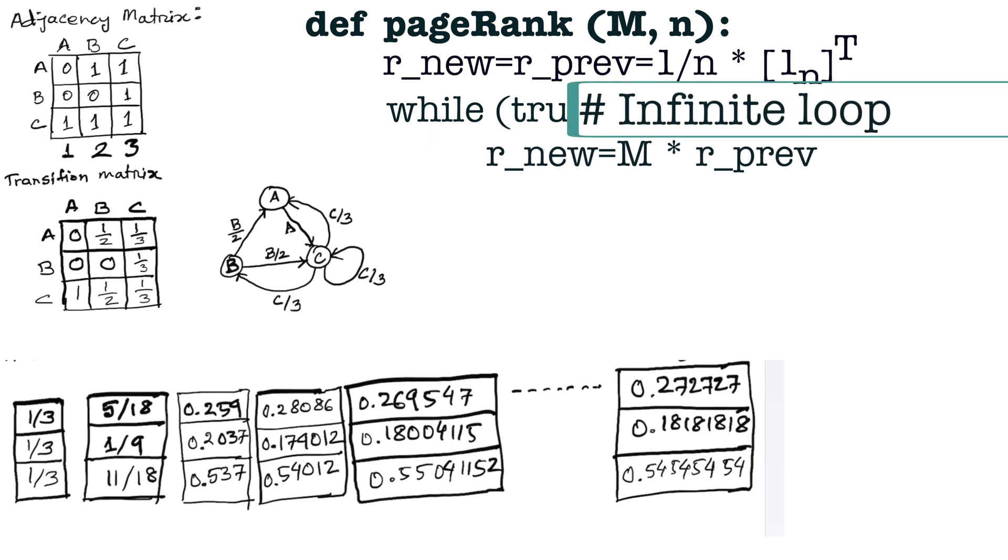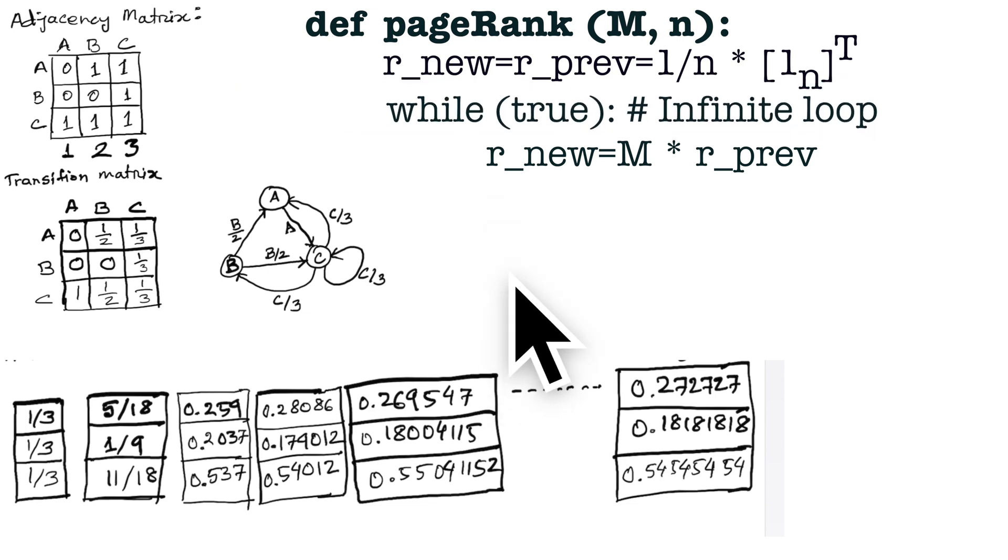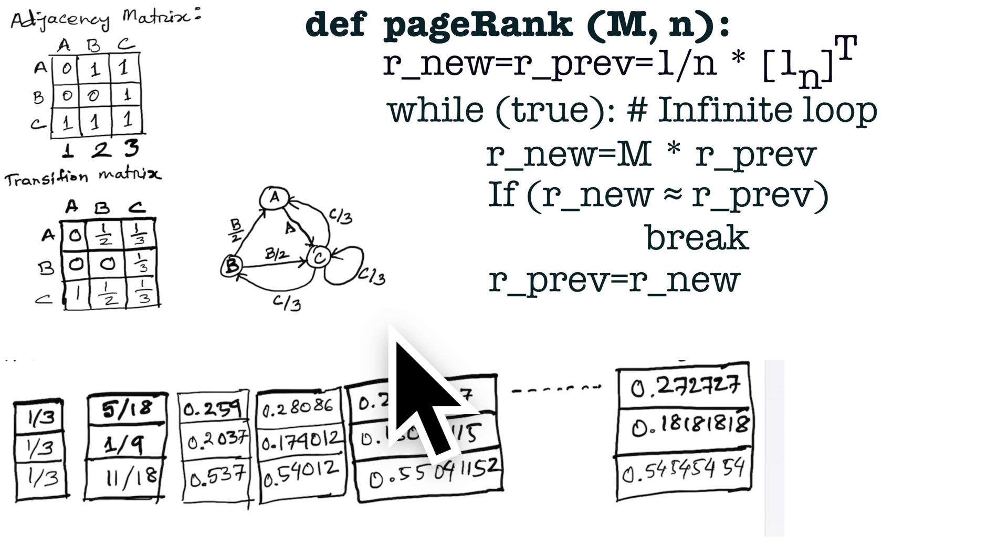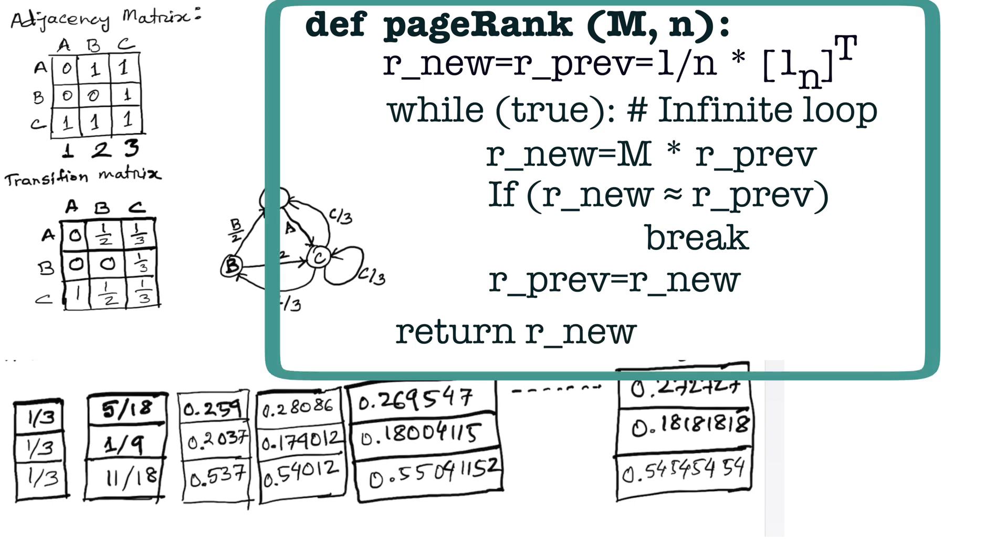Let us make sure that after computing the new rank vector r_new, before repeating this line, we copy r_new to r_prev so that in the next iteration the latest computed rank vector is used. If this keeps iterating, there will be a time when r_prev and r_new will be almost the same - that is, the rank vector will converge. At that time we should break this loop. We put a check here: if r_new and r_prev are almost equal, then break the loop. After coming out of the loop, r_new contains the latest page rank vector that has converged, so we return r_new. This pseudocode shows the basic page rank algorithm.